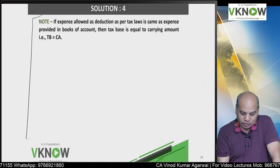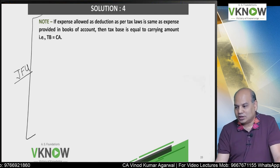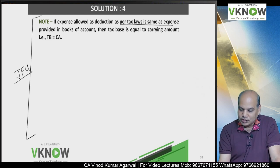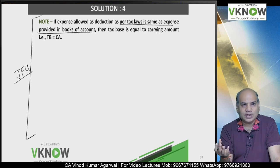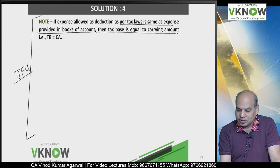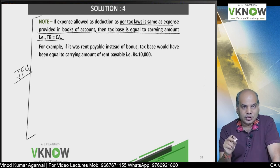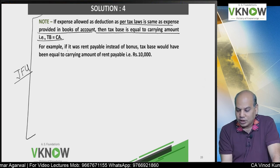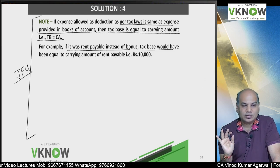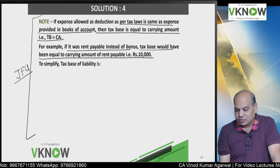There is a note I have written, just for understanding. If expense allowed as per tax law is the same as expense provided in the books of account — like any normal expense such as rent, transporter's bill, electricity bill payable — then tax base is equal to carrying amount, because you are allowing the same deduction in books and for tax purpose also. Example: if it was rent payable instead of bonus, Income Tax Act does not speak about rent payable, which means they will permit it on accrual basis. So the tax base will be 10,000.